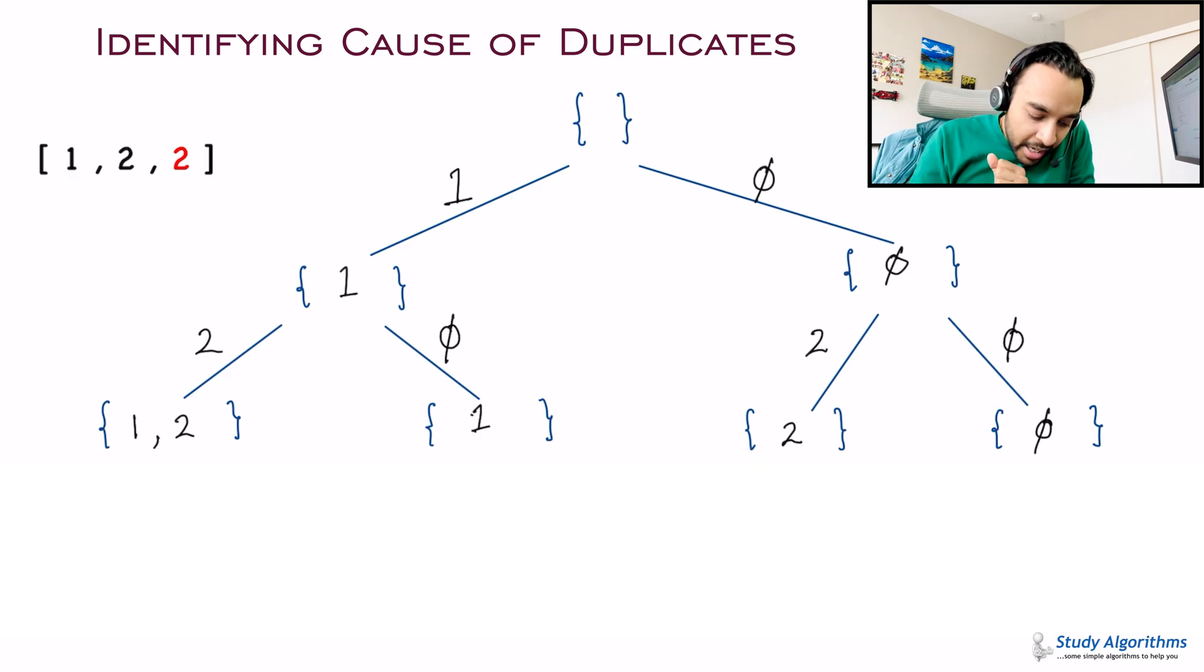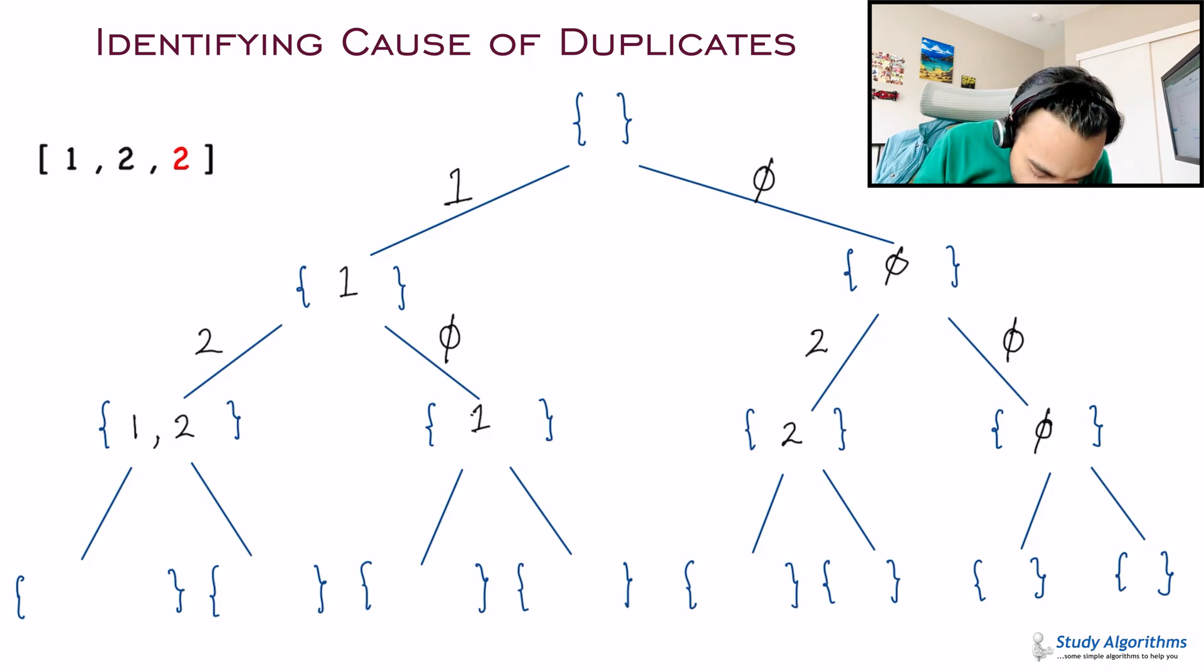Either I keep the element 2 or I do not keep the element 2. Either I keep the element 2 or I will not keep the element 2. Right? And this will give me new subsets. So, I get 1, 2 and over here I just get a 1. Over here I get the element 2 and once again I get an empty subset over here. Right? So far, this problem is the same. Right? Now comes the interesting part. I have another 2 over here and that is a duplicate. Right?